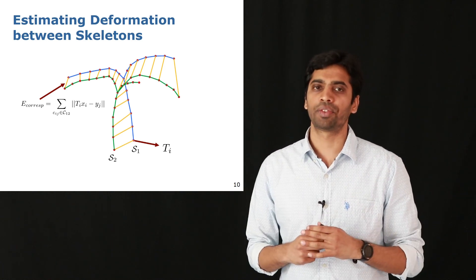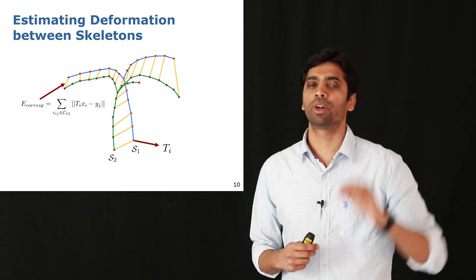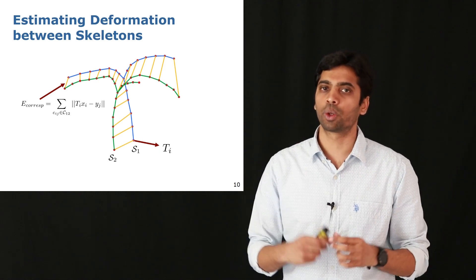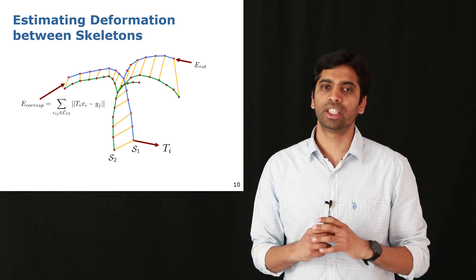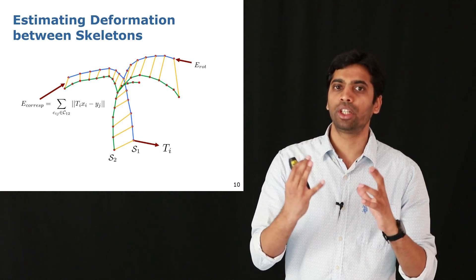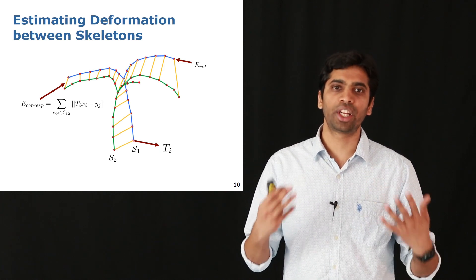This error basically captures the distance between the nodes of S1 and S2 after they have been applied through the affine transformation. Basically we want such an affine transformation which brings corresponding points on the two skeletons as close as possible. The second energy is a rotational energy which tries to ensure that the rotational component of our affine transformation is as close to a true rotation as possible.